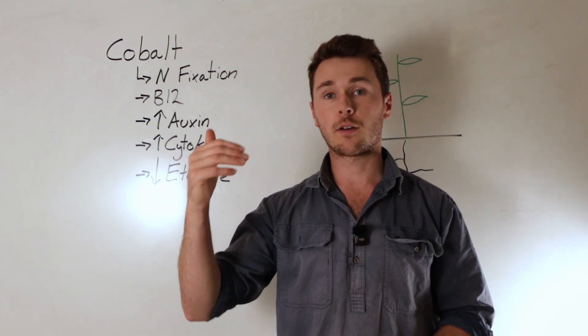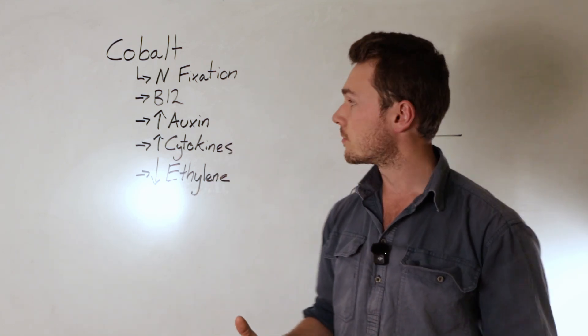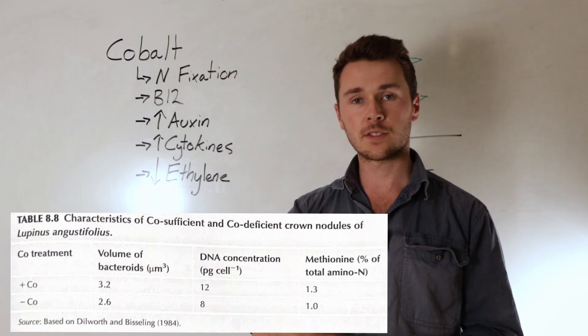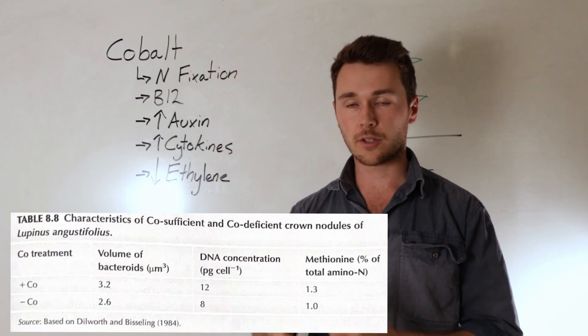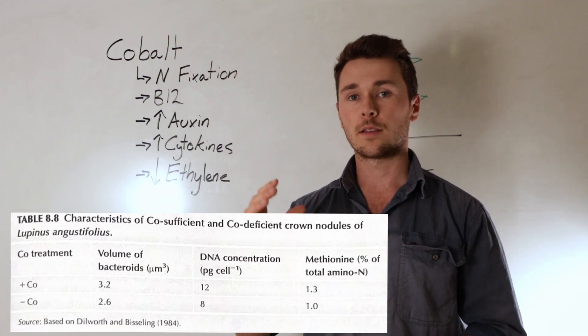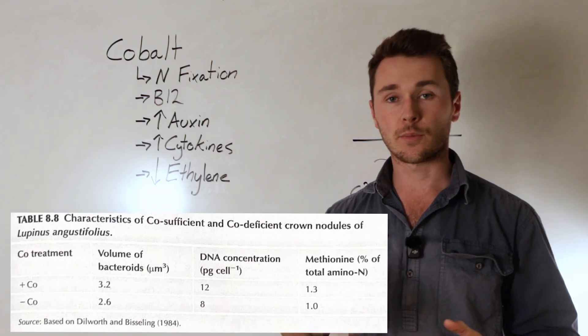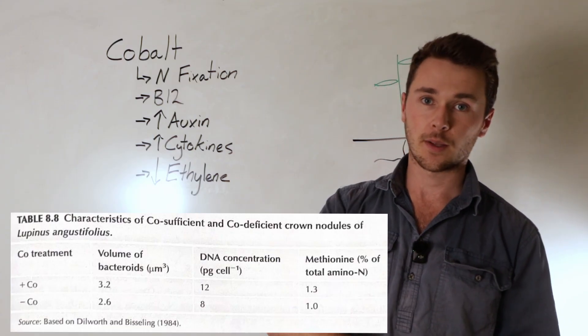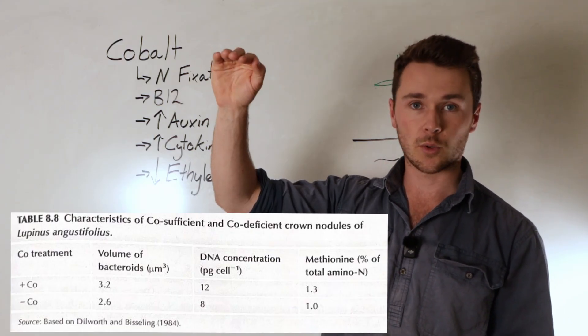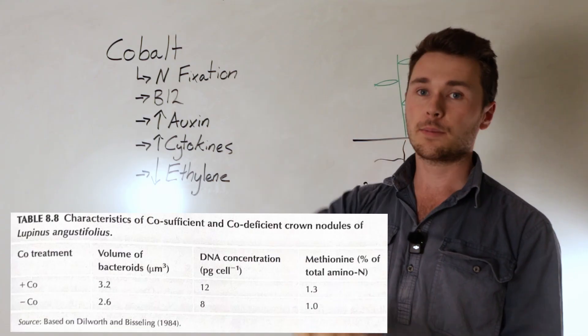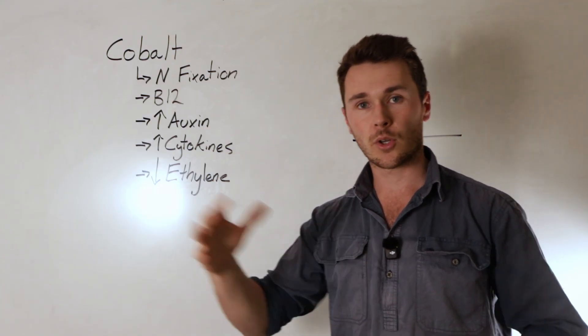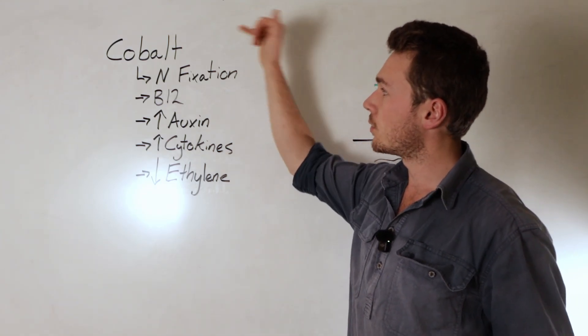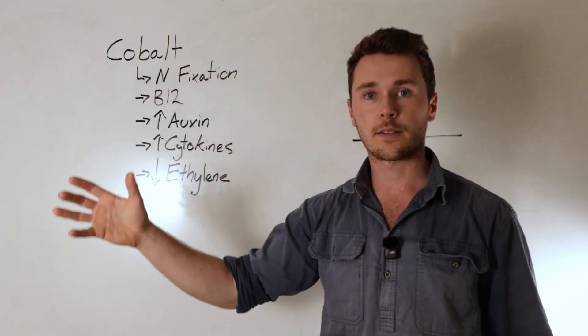So the first benefit is the size of the rhizobium in legumes. You see here a study of lupins before and after the application or with and without cobalt. You'll see that the bacteria size or volume within the nodules of the lupin goes from 2.6 in the cobalt deficient plant to 3.2 in the cobalt sufficient plant. So that's a pretty big increase when you think about it in terms of volume. That's going to mean that there's more nitrogen fixation occurring in the plants that have good cobalt because they've got a larger size bacteria.